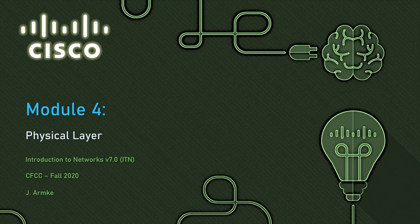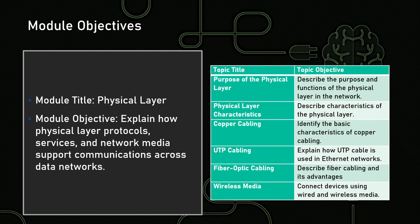Good day, everyone. Mr. Armke back with you again for NET 125 Module 4. Today we're going to be talking about the physical layer, the actual encoding of signals into the bits that we use to transfer them across various types of network media. We're going to look at how the physical layer functions, some characteristics thereof, different types of cabling — specifically copper cabling — and we'll talk about UTP and STP as far as those are concerned with Ethernet networks. We're also going to look at fiber optic cabling and its advantages and a couple of disadvantages, as well as wireless media, very common in our current networking situations.